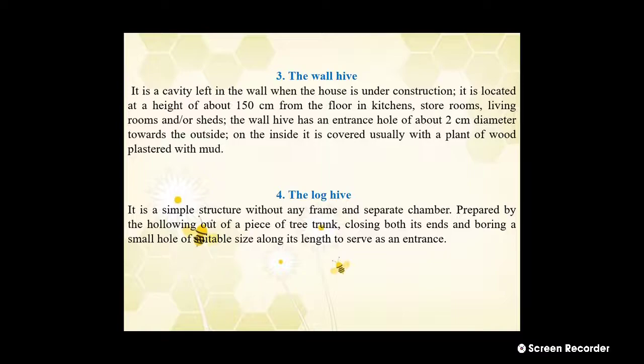The third type is the wall hive. It is a cavity left in the wall when the house is under construction, located at a height of about 150 cm from the floor in kitchens, store rooms, living rooms, or sheds. The wall hive has an entrance hole of about 2 cm diameter towards the outside, and on the inside it is covered with a plank of wood plastered with mud.